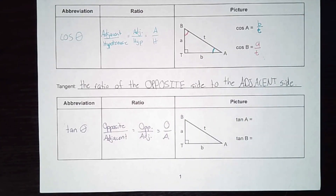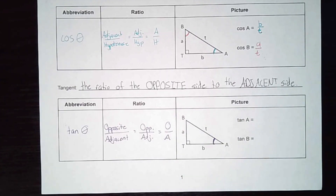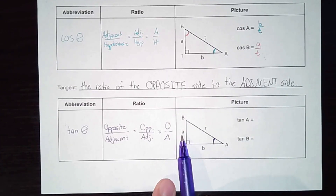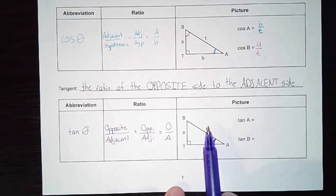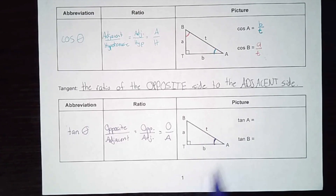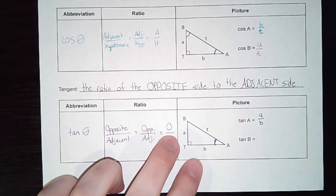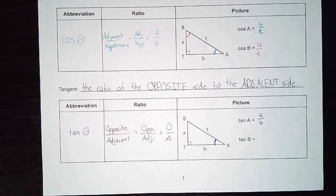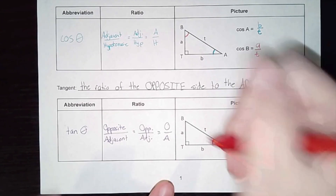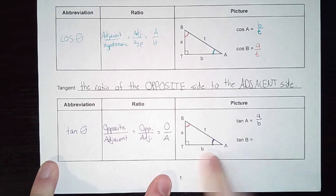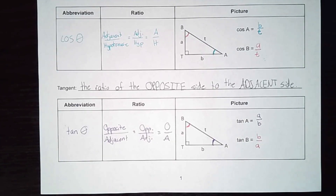For angle A, the opposite is all the way across, which is side A. The adjacent is where it gets tricky — it could be B or T, but T is still the hypotenuse even though we're not using it here, so I have to use B. Tangent of A is A over B. For angle B, the opposite is all the way across to B, and the adjacent is A because you can't use T — that's the hypotenuse. Those are your ratios.